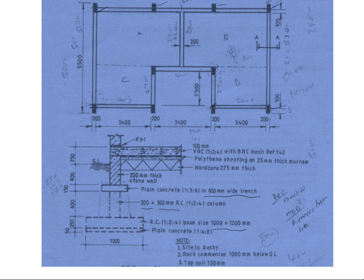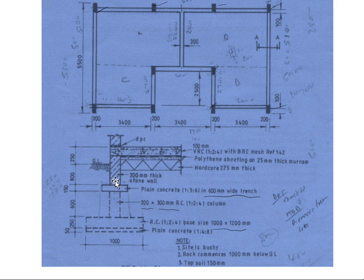Our interest is in the excavation part. The notes tell us that the site is which and rock commences 1000 millimeters below ground level. Without going far, 800 plus 150 is 950 — so up to the trench is 950 millimeters. Our rock is occurring at 1000 millimeters, meaning the rock is somewhere in the columns.